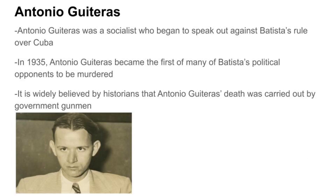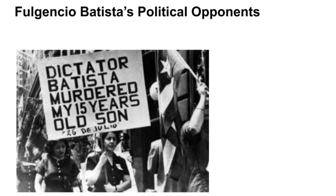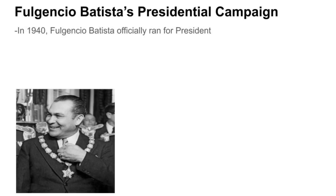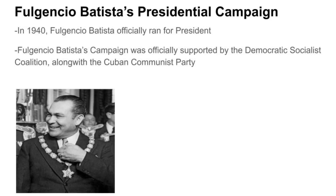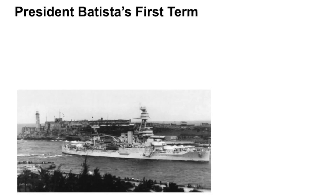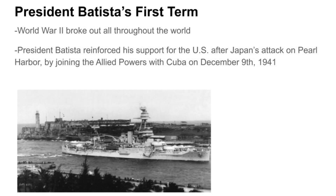As Batista's power grew, a socialist named Antonio Guitares began to speak out against his rule. In 1935, he became the first of many of Batista's prominent political opponents to be murdered — widely believed by historians to have been carried out by government gunmen. Several other political opponents then began to disappear without a trace. In 1940, Batista officially ran for president, supported by the Democratic-Socialist Coalition and the Cuban Communist Party, winning the presidency. During his first term, Cuba joined the Allied powers on December 9, 1941, following Japan's attack on Pearl Harbor.